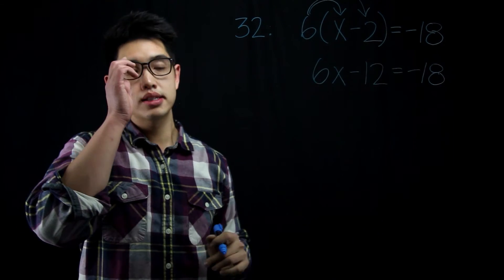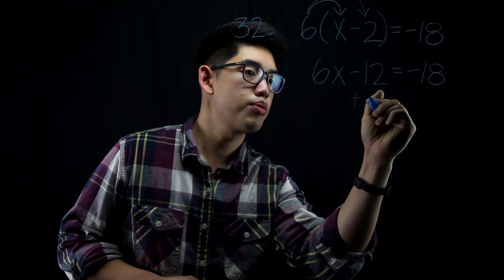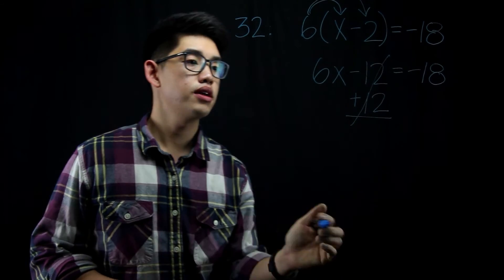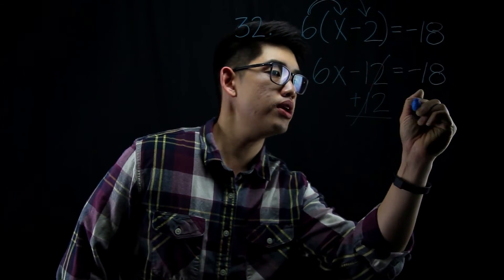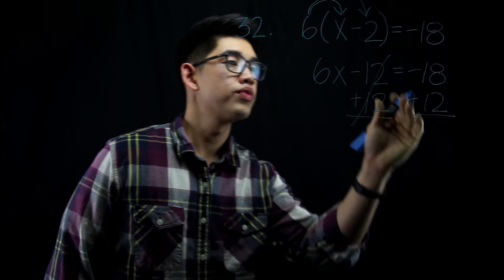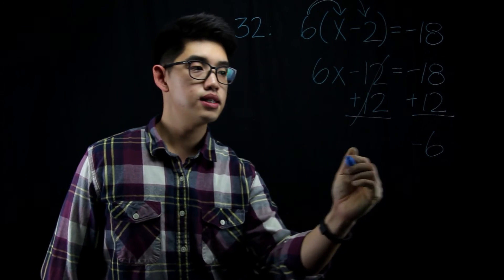I want to get x by itself, so I'm going to add 12 on both sides. That's the inverse operation of subtracting by 12. That's going to cancel out. And because I added 12 on the left side, I've got to do the same thing on the right side. Negative 18 plus 12, that's going to be negative 6. Drop down to 6x here.